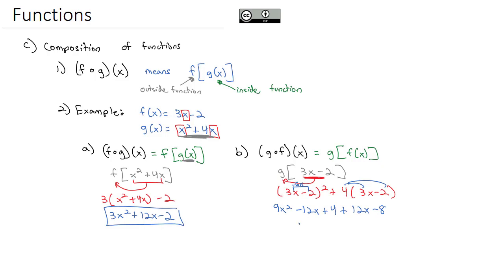And then we can combine like terms to get 9x squared. Negative 12x plus 12x is a nice 0. So just 4 minus 8 gives us a negative 4. And we get our composition of functions g of f of x is 9x squared minus 4.